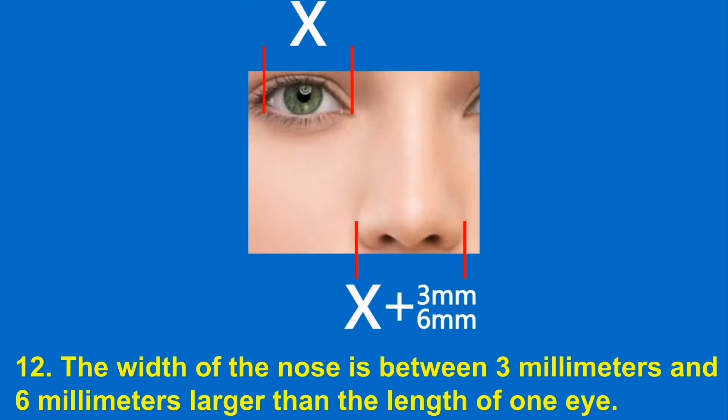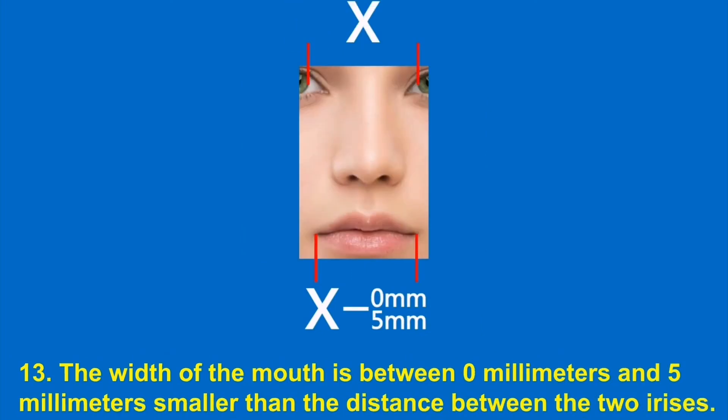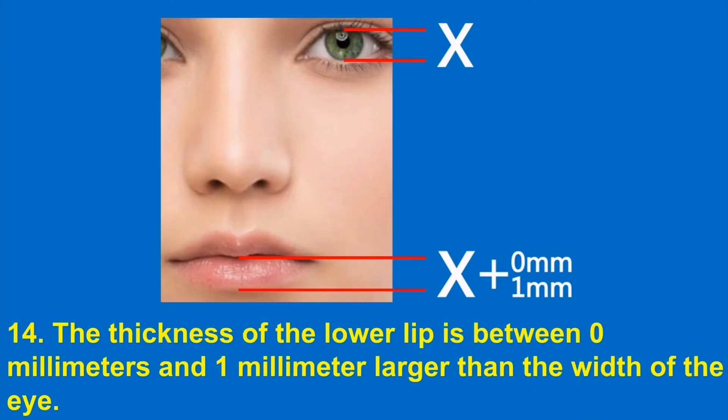12. The width of the nose is between 3 millimeters and 6 millimeters larger than the length of one eye. 13. The width of the mouth is between 0 millimeters and 5 millimeters smaller than the distance between the two irises. 14. The thickness of the lower lip is between 0 millimeters and 1 millimeter larger than the width of the eye.